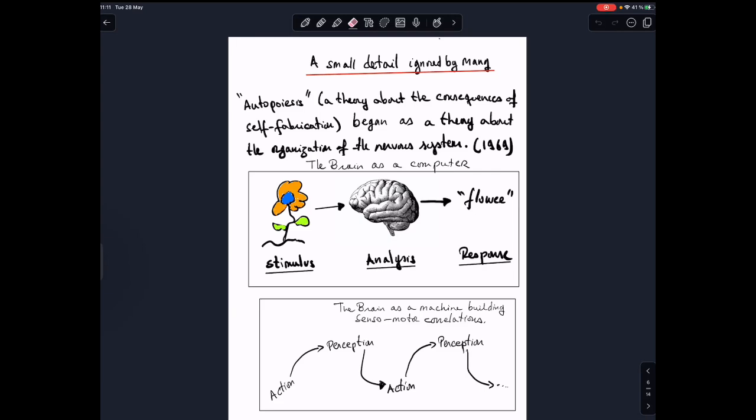On the other hand, Maturana in 1969 said no, the brain doesn't analyze an external reality. The brain, the only thing that it does continuously, is in a loop, action, perception, action, perception. And it's in this loop that the objects are created. Then the nervous system does not analyze a reality, but it creates internal correlations between action and perception.